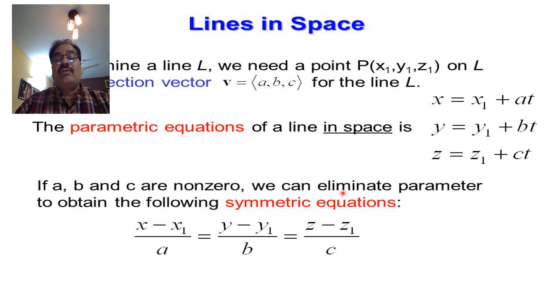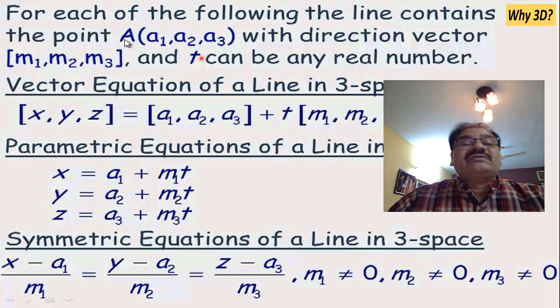If a, b, and c are non-zero, we can eliminate the parameter t to obtain the symmetric equation: (x - x₁)/a = (y - y₁)/b = (z - z₁)/c. This is the Cartesian form of the line equation.